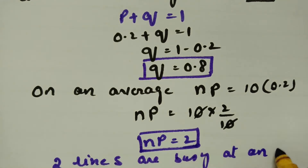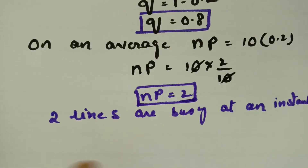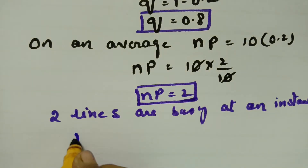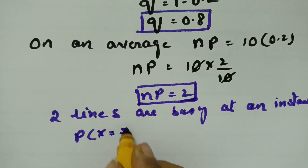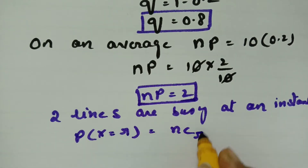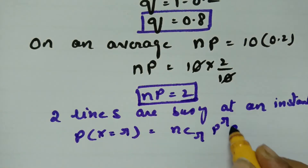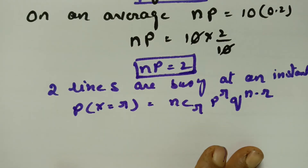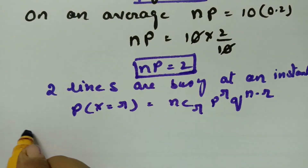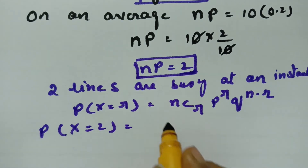Now, the probability of x equal to r is given by the formula: nCr times p power r times q power n minus r. Since two lines are busy, x is equal to 2.